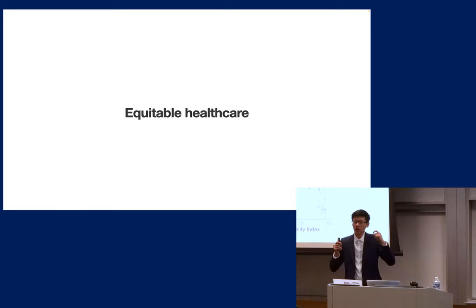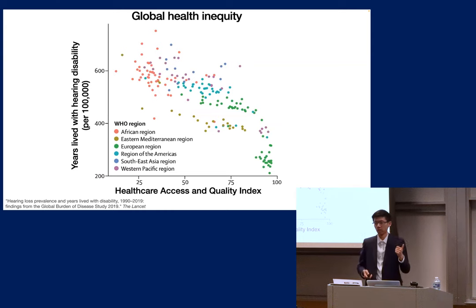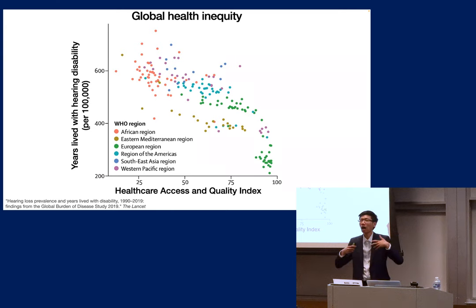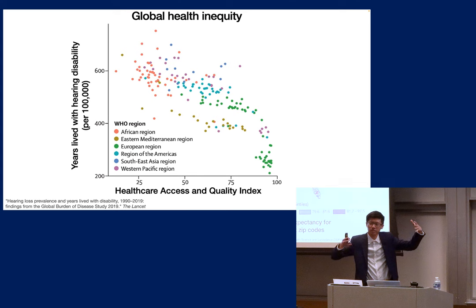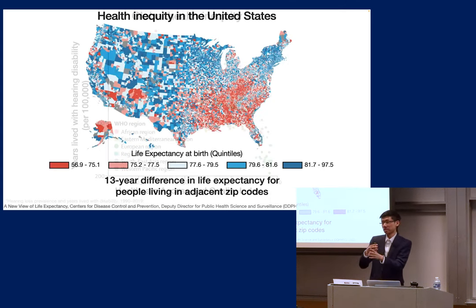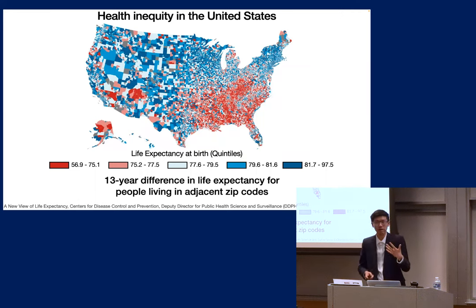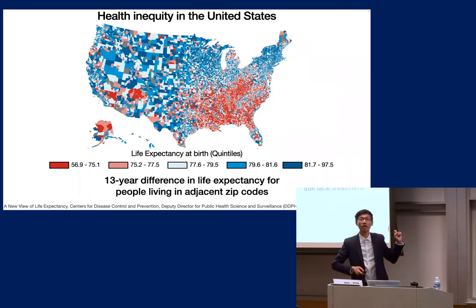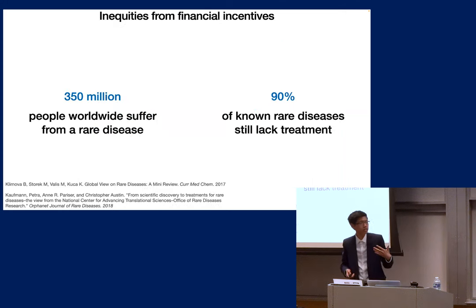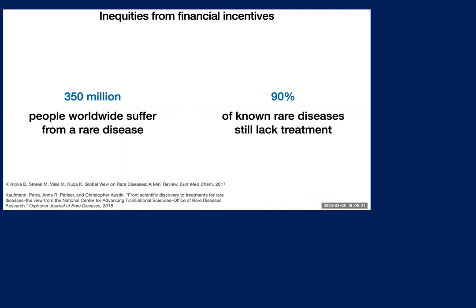That area is equitable healthcare. Health inequities often show up in the global health setting, where the country a person is born in can hugely affect access to basic medical resources like hearing care — often due to prohibitively high prices. Even in adjacent zip codes in the U.S., life expectancy can vary by up to 13 years. Some smart devices like smartwatches cost hundreds of dollars, making them inaccessible. And rare diseases often lack financial incentives for pharmaceutical and medical device companies to create solutions.